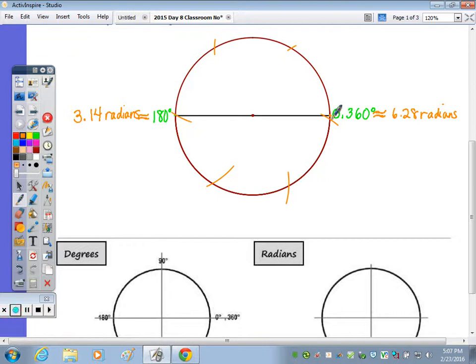Now 3.14, you should recognize that an approximation of 3.14 is the same as the number pi. So pi radians is equal to 180 degrees. And if I double that 3.14 to get 6.28, this is 2 pi radians is equal to 360 degrees. So let's box those.